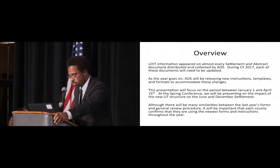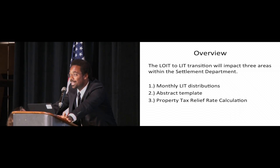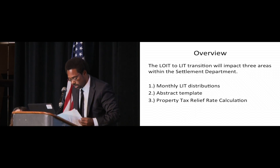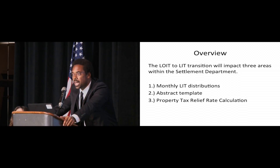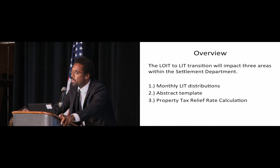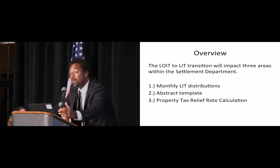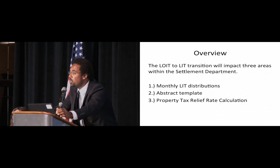These are the three main areas we're going to cover today: the monthly LIT distributions processed by our office, the changes to the abstract template we'll be using for 2017, and the impact of the LIT changes on the property tax relief rate calculation. We know that all 92 counties are going to be impacted by the first one. As we work through the other examples, your county may not be configured this way as of October 6th, but as you start adopting some of these new options, you may end up becoming configured this way.